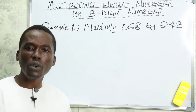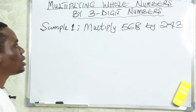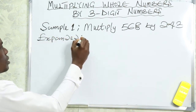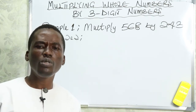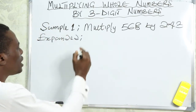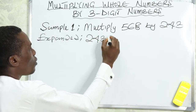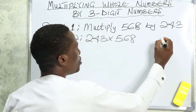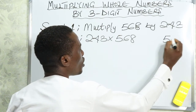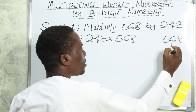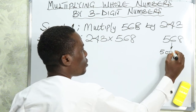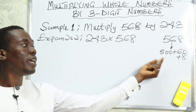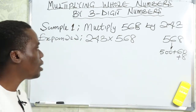Now, assume you are asked to multiply these two numbers — how do you go about it? We're going to use the expanded form method. When multiplying using the expanded form method, we're going to multiply 243 by 568. We expand 568 to get 500 plus 60 plus 8. So 243 will be multiplying 500, 60, and 8.